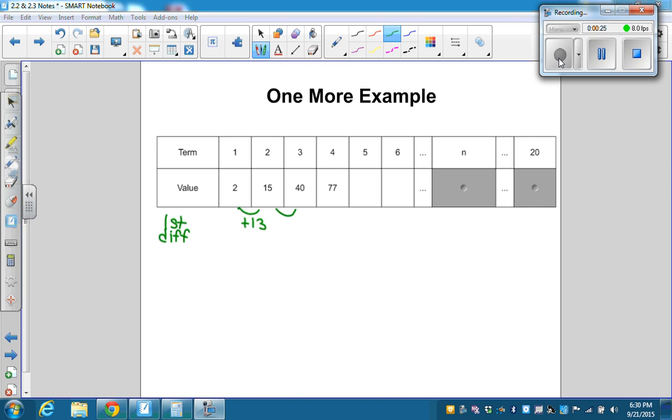So it increases by 25, because 15 plus 25 is 40. And then it increases again by 37. So you know it's not linear.